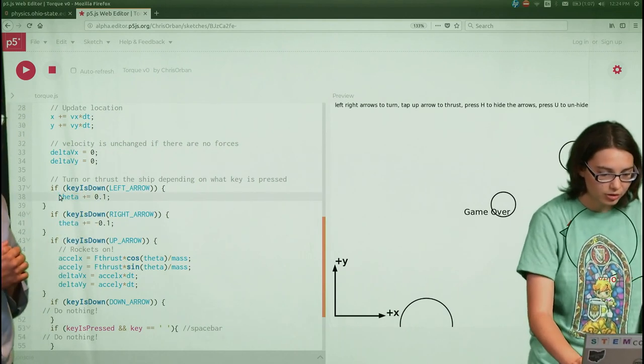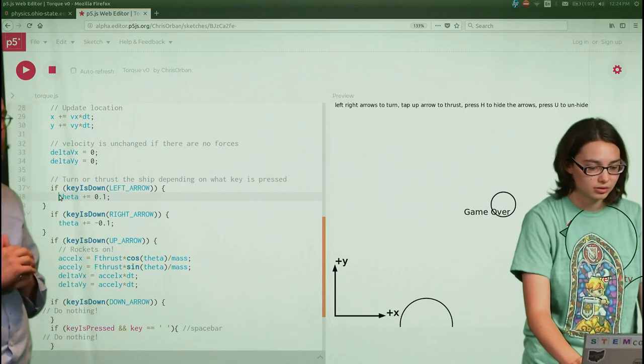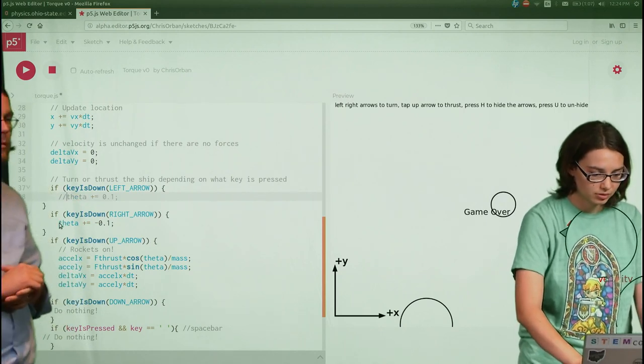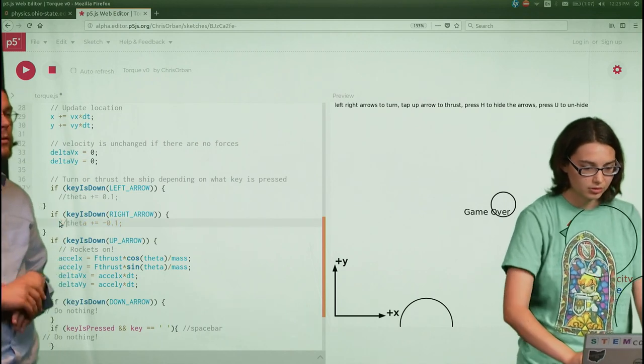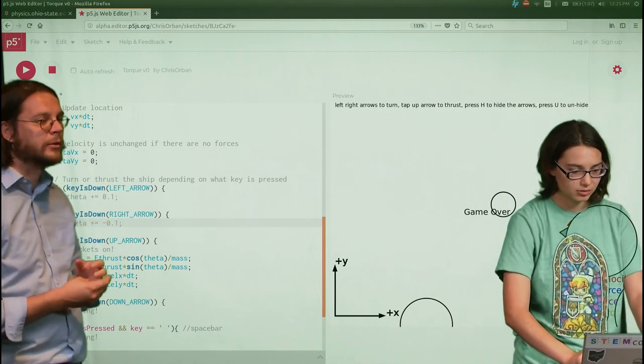Yeah, so instead of just changing theta every time we press that, we're gonna comment those out with two little slashes. Whenever you put slashes in front of something, it turns it into a comment so the computer doesn't actually run that code.